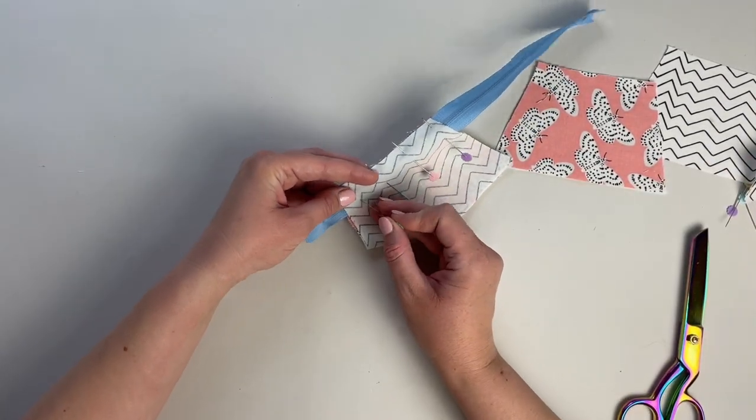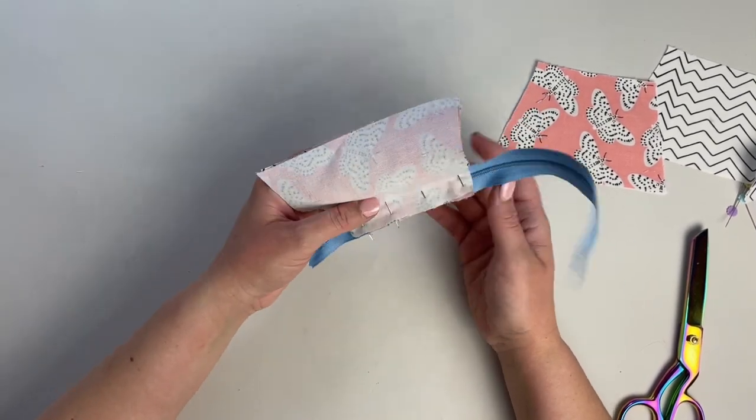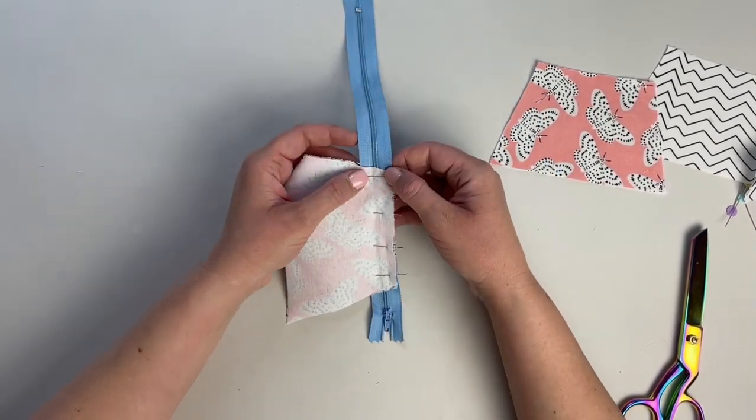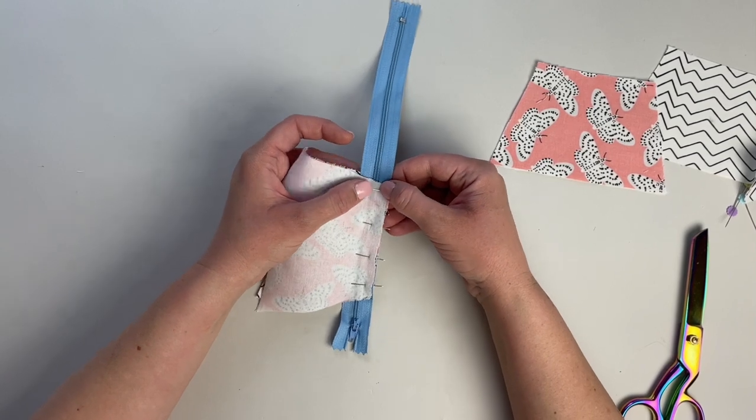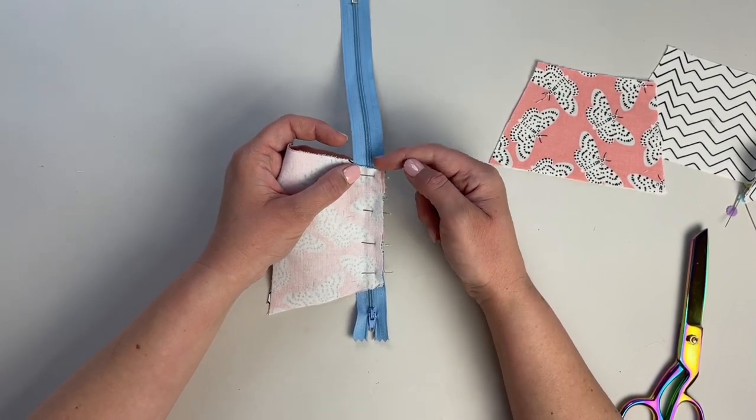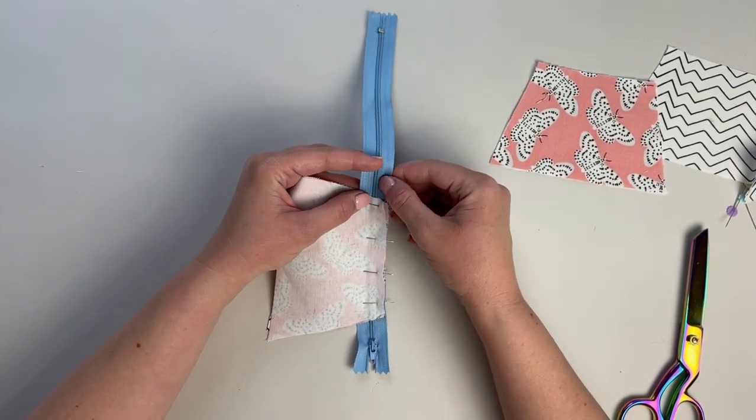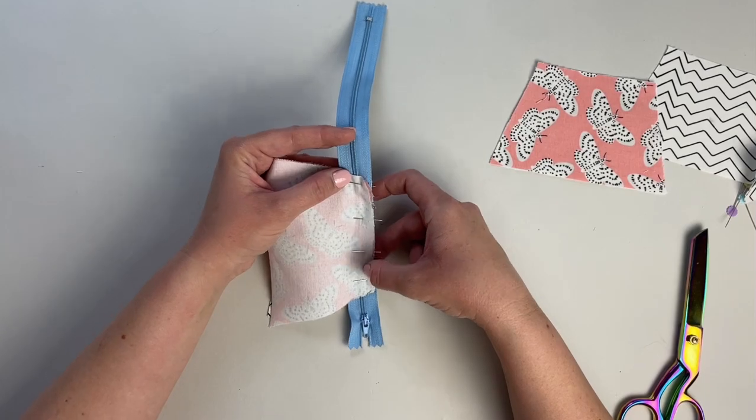And now we're going to sew across the top of this zipper, sandwiching the zipper in between. So I'm going to line my needle closer to the zipper teeth and butt the presser foot up against the zipper to make a straight line all the way across.